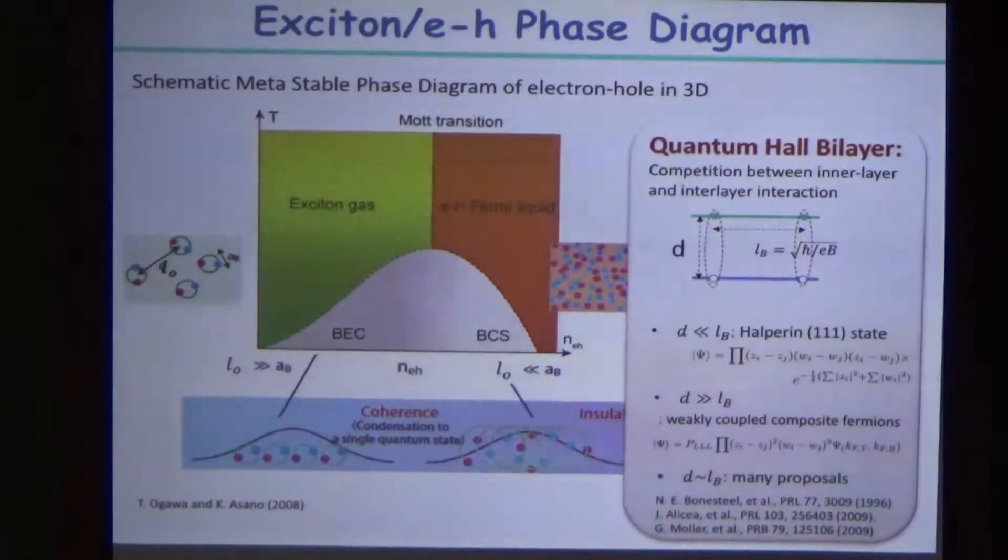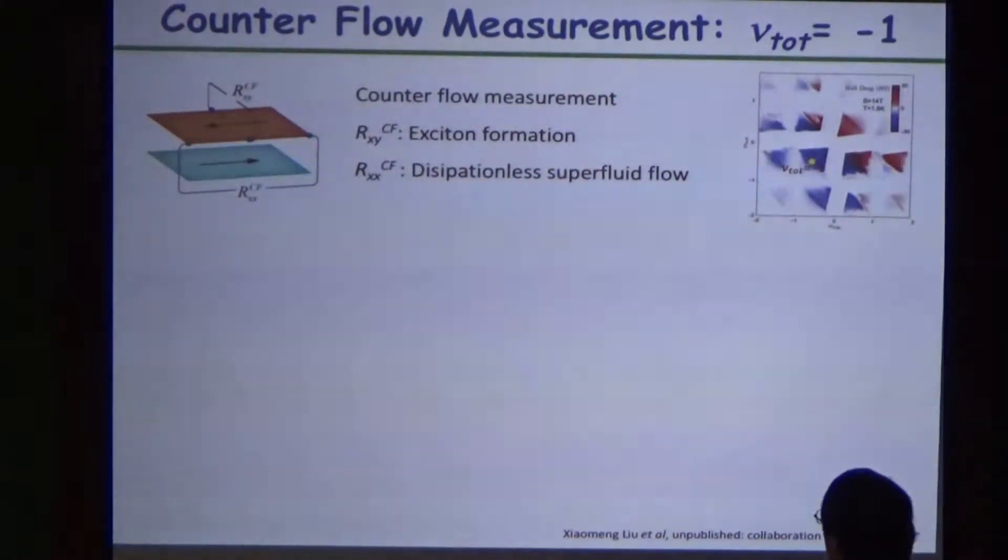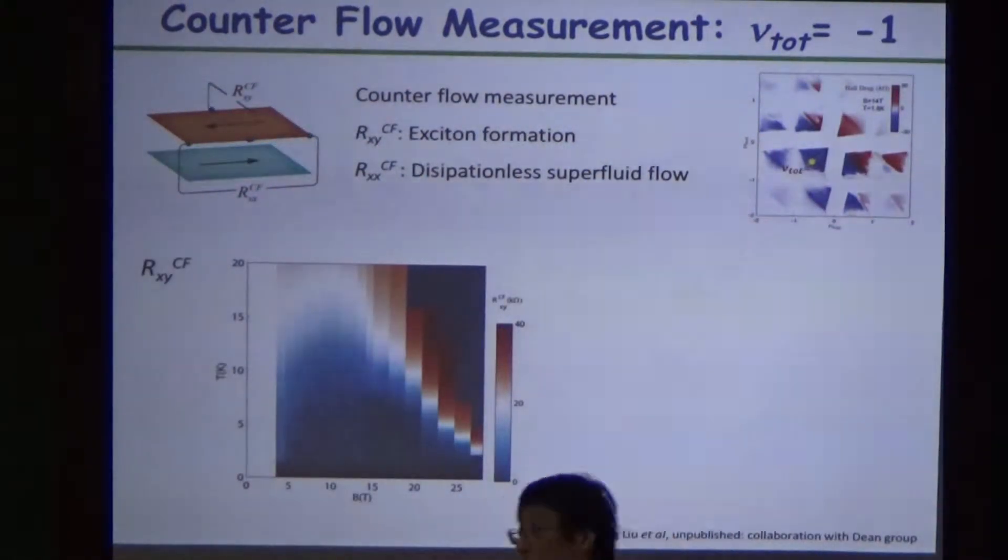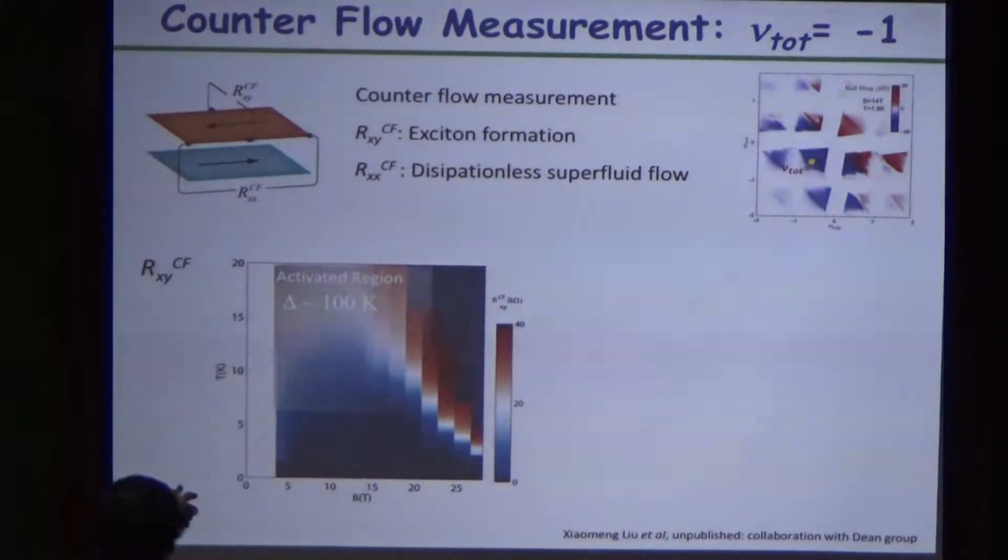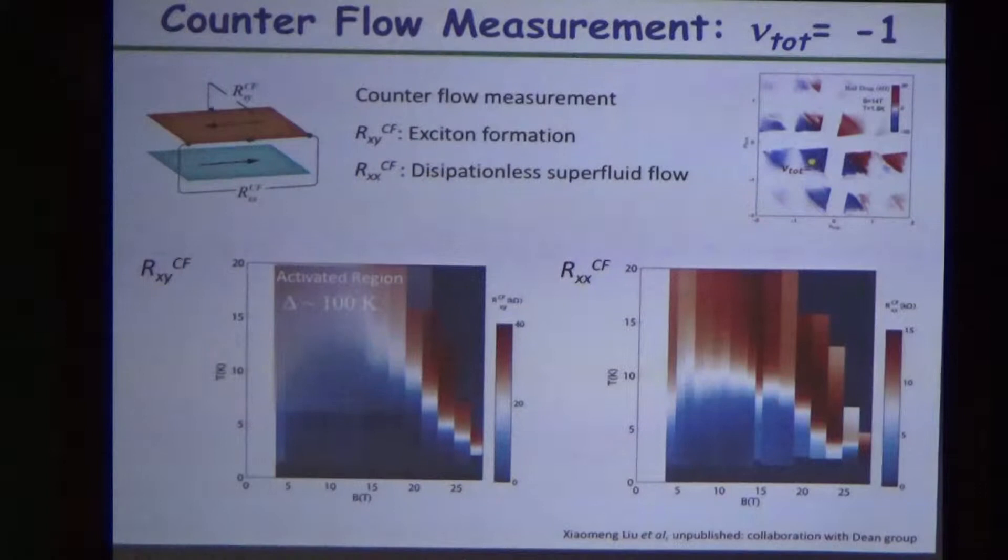When you have this magnetoexciton condensation, there are natural knobs you can tune. One is temperature, but the other is magnetic field, which in principle controls the exciton densities. With these pictures, very similar things also appear not only at nu equal to zero, but any of this magnetoexciton condensation starts to show very similar things.